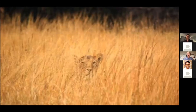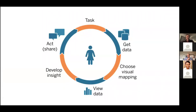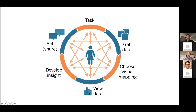I'll get into how we encode data visually in a moment. But we did a lot of studies at Xerox Palo Alto Research Center of various people working with data, and we developed a high-level description called the cycle of visual analysis. You start with a task where data is relevant to it. You need to get the data, choose a visual mapping, view the mapping, develop an insight, and go off and act. When we studied people doing this, we found it was a really rich, complex backtracking process that is cognitively challenging.